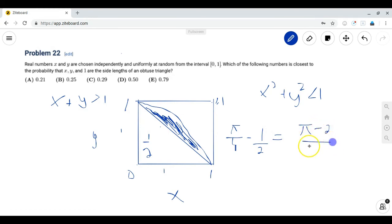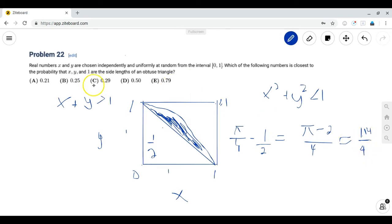Now we just have to find what this looks like in our answer choices. Since pi is about 3.14, pi minus 2 is about 1.14. And so this is equal to about 1.14 over 4. And if you divide 1.14 by 4, you get 0.285, which is the closest to answer choice C, which is 0.29, and we are done.